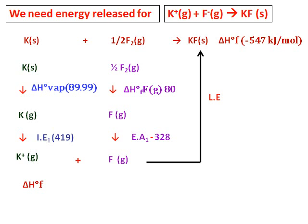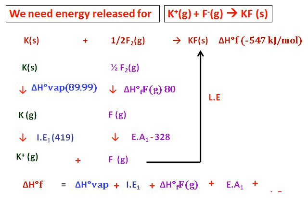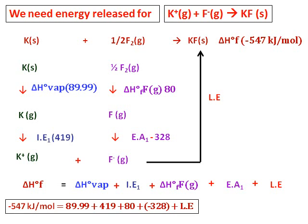So ΔH formation is actually equal to: the ΔH of vaporization, then the ionization energy, then going back to the fluorine — ΔH formation of fluorine — then add the electron affinity, and then the lattice energy. So this is the basic formula. I have the value for all of them except the lattice energy. Substitute the values and I get the value of lattice energy. This could be a little confusing, so I will show you another method that I am going to use for lattice energy of various other compounds also.